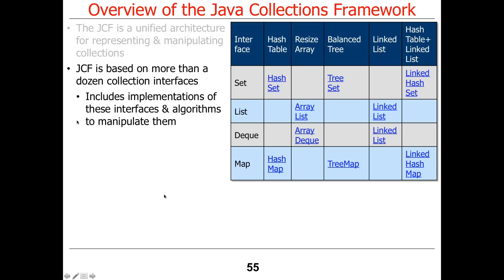Why would Java collection frameworks have different implementations of the same interface? Why isn't one sufficient? Because the type and amount of data affects the speed of the program. If you remember 201, you studied asymptotic time complexity — insert, remove, find, and all the operations on an abstract data type like a list, set, map, hash table, or queue. Different implementations have different properties.